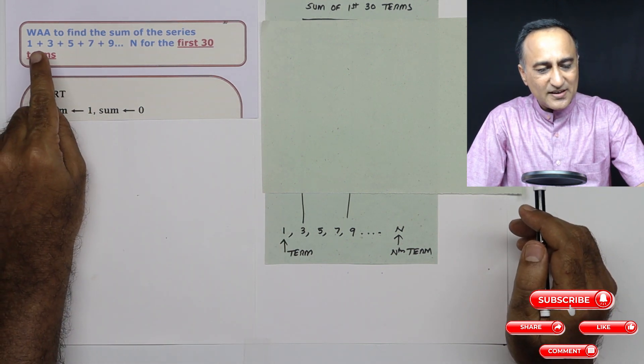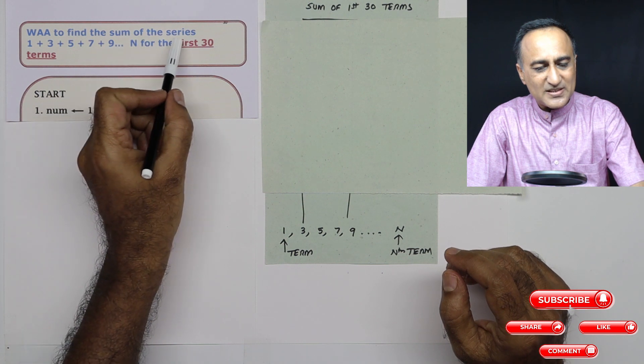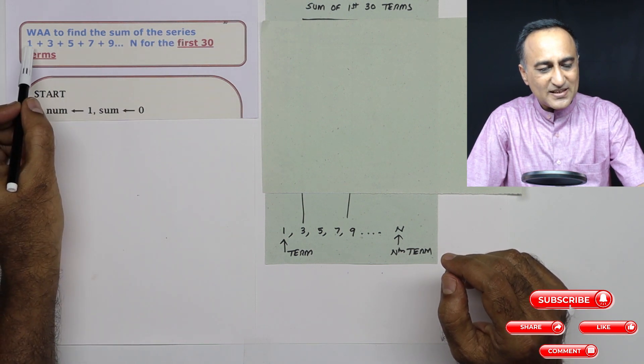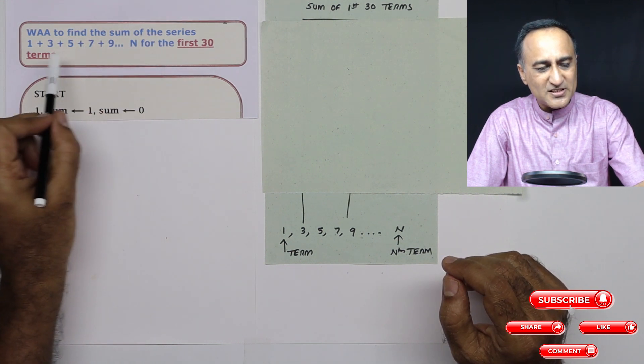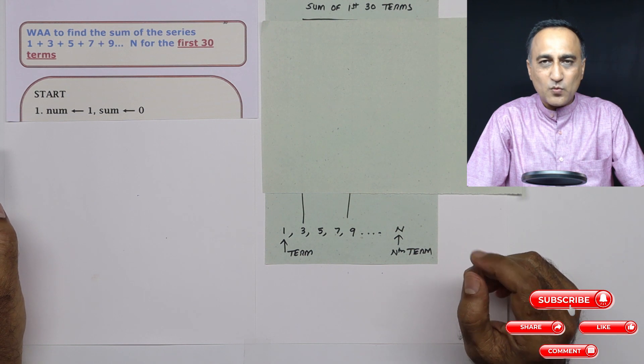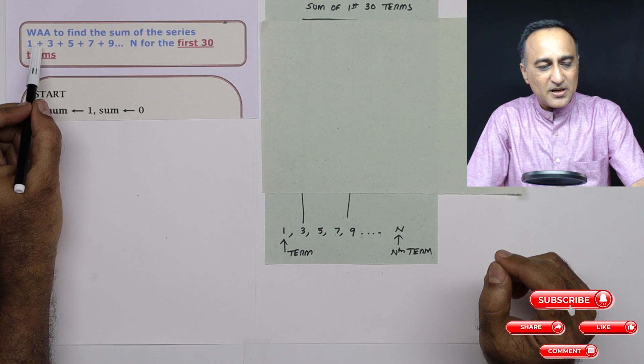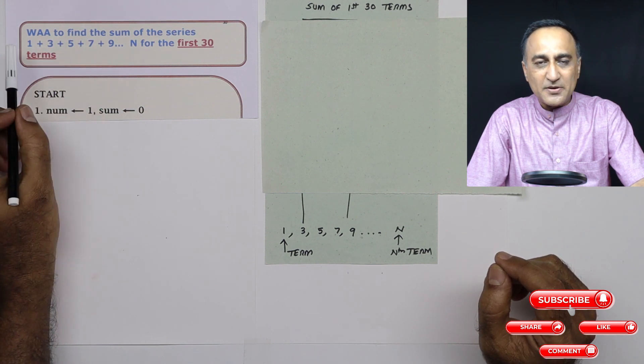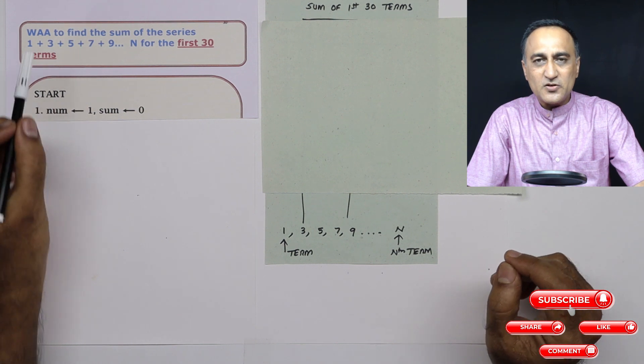If you see here it is saying write an algorithm to find the sum of the series 1 plus 3 plus 5 plus 7 plus 9 all the way till the end for the first 30 terms. First thing you need to understand what is this series? This is a series which is generating odd numbers because the gap between each number happens to be 2 and the first number is 1, 3, 5, 7 and so on.